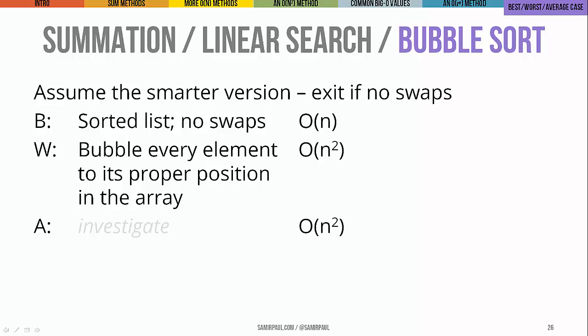For the smarter version of bubble sort that quits as soon as no swaps occur: in the best case — if the input array is already sorted — the runtime is O of n (n minus one comparisons). This case is rare. In the worst case, even this smarter version has an n squared runtime. Its average case behavior is also O of n squared, though proving that is more involved than for linear search. We commonly see algorithms whose best case and average case are similar, but whose worst case degrades significantly — something to keep in mind when choosing an algorithm for a particular problem.